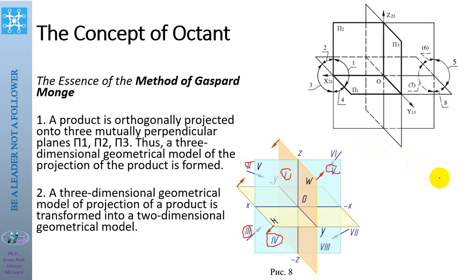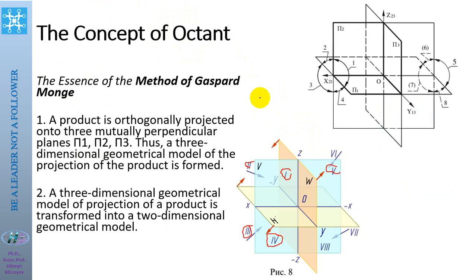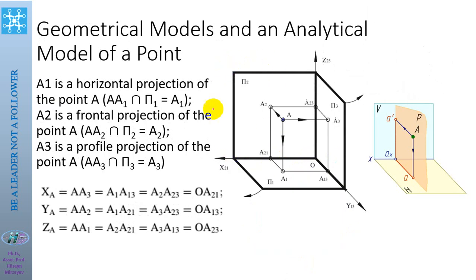A three-dimensional geometrical model is transformed into two-dimensional projections. In the first octant — in front of the vertical plane and above the horizontal plane, with the profile plane on the left side — if we take a point A, its horizontal projection is called A1, its frontal projection is A2, and its profile projection is A3.